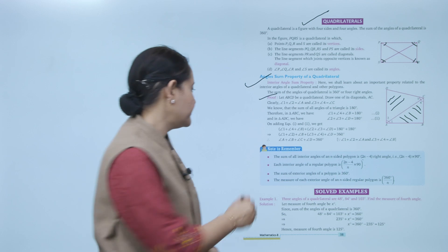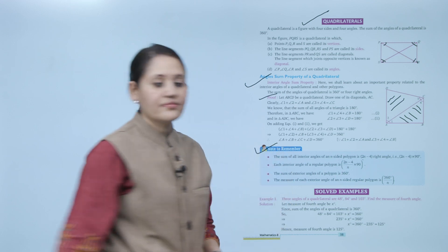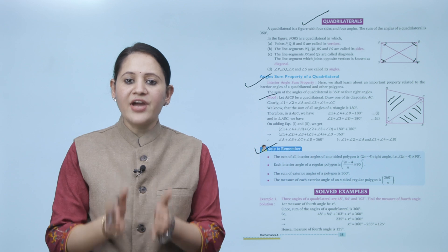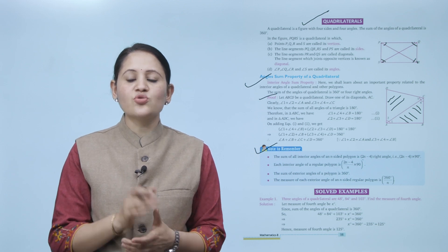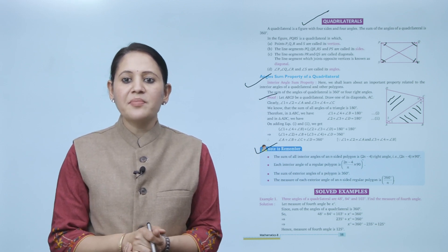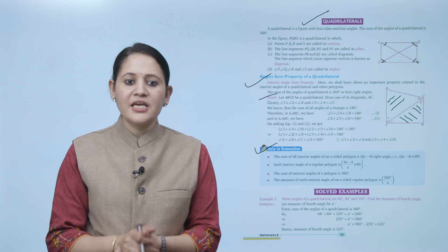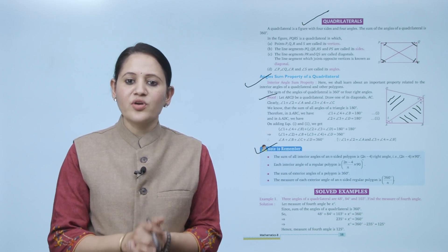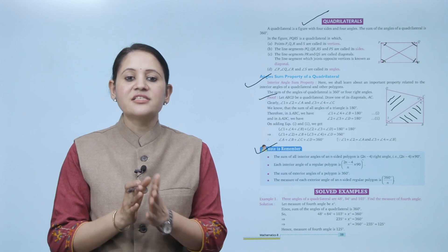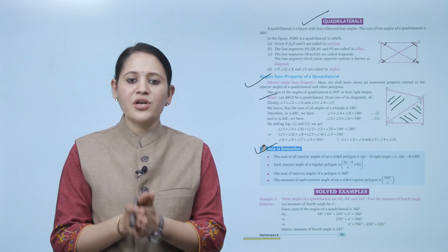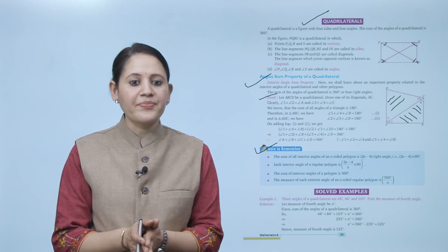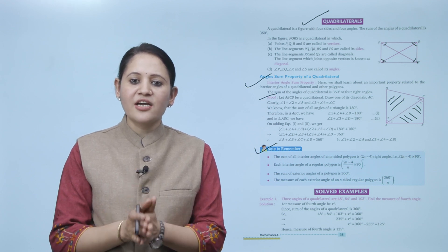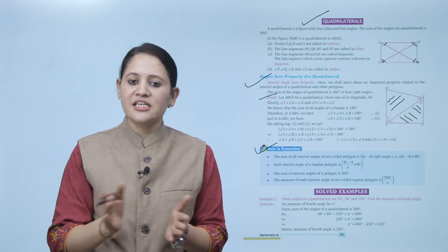Note to remember: the sum of all interior angles of an N-sided polygon is (2N−4) right angles, or (2N−4) × 90 degrees. Each interior angle of a regular polygon is (2N−4)/N × 90 degrees. The sum of the exterior angles of a polygon is 360 degrees. The measure of each exterior angle of an N-sided regular polygon is 360/N degrees.